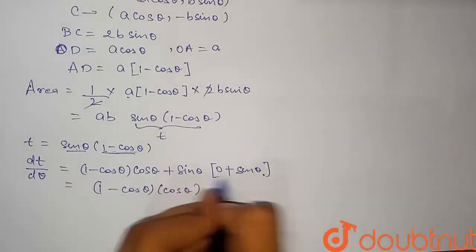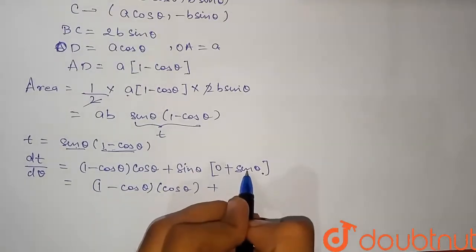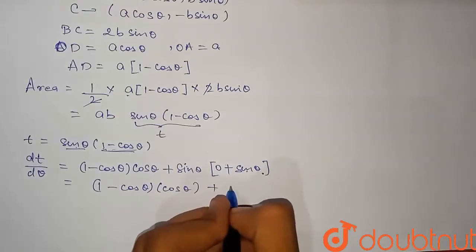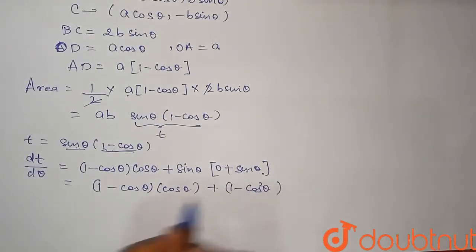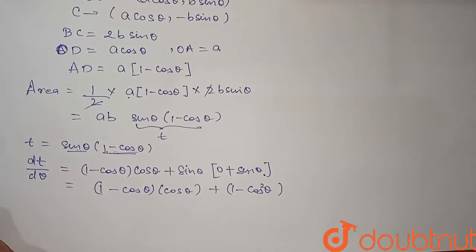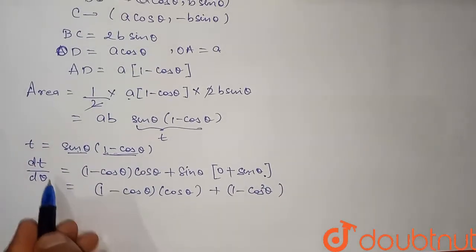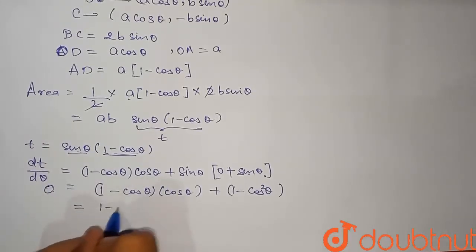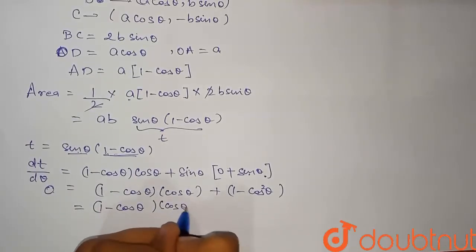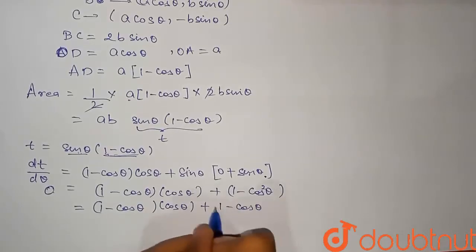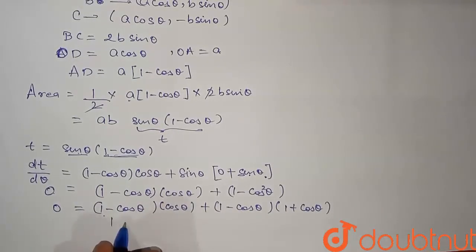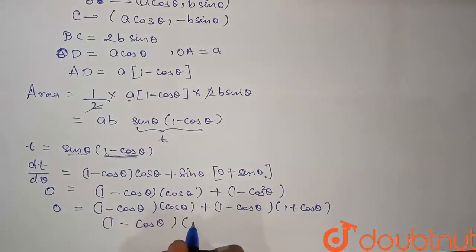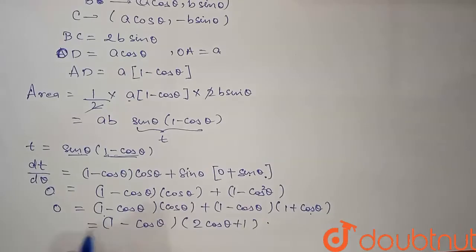We substitute sin²θ = 1 − cos²θ = (1 − cosθ)(1 + cosθ). So dt/dθ = cosθ(1 − cosθ) + (1 − cosθ)(1 + cosθ). Factoring out (1 − cosθ) gives (1 − cosθ)(cosθ + 1 + cosθ) = (1 − cosθ)(2cosθ + 1). Setting dt/dθ = 0 gives (1 − cosθ)(2cosθ + 1) = 0.